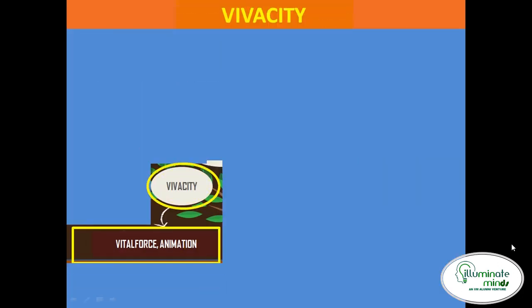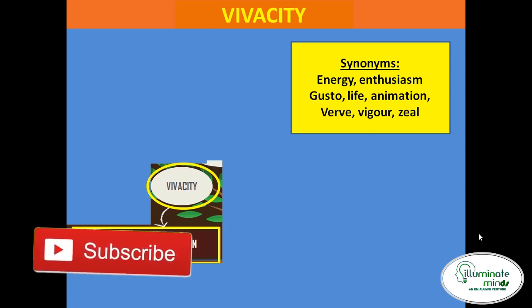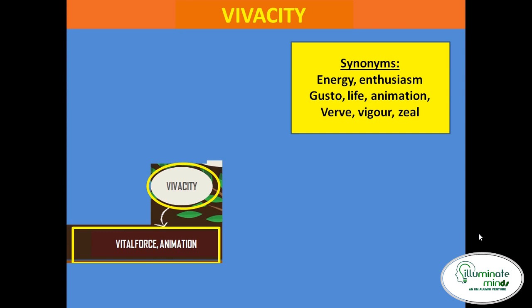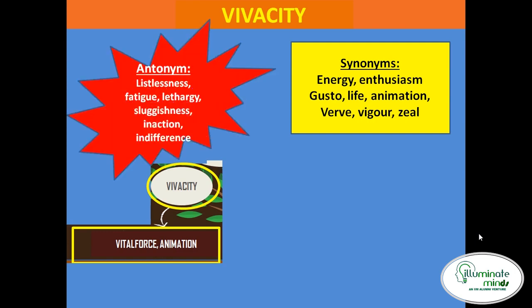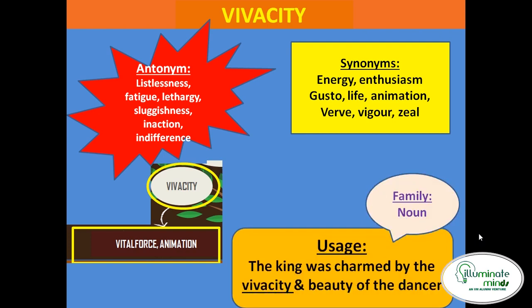Next word is 'vivacity'. The meaning is vital force or animation — Hindi mein bol sakte ho 'chusti', 'zindadili', 'utsah', 'sajeevata'. Synonyms: energy, enthusiasm, gusto, life, animation, vigor, zeal. Antonyms: lethargy, fatigue, sluggishness — sluggishness means slow action, bahut inactive mode mein rehna. Word family is noun. Usage: the king was charmed by the vivacity and beauty of the dancer — raja uski zeel aur passion dekh ke bahut prabhaavit hua.